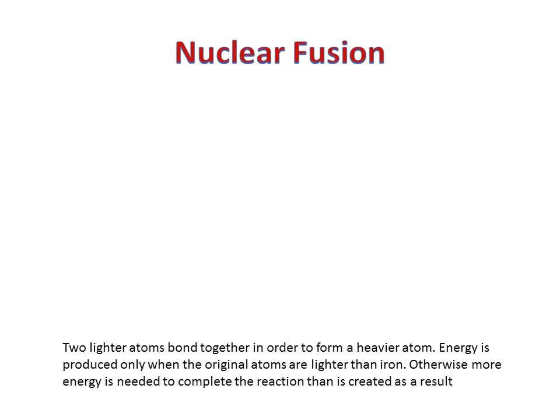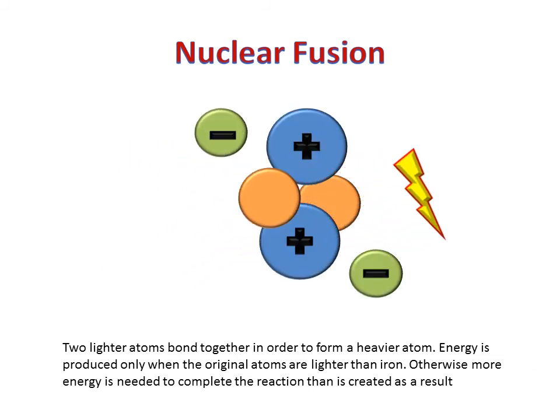Nuclear fusion is essentially the opposite of nuclear fission. Nuclear fusion is the result of two lighter atoms bonding together to form a heavier atom, or an atom with a greater atomic mass. However, this process requires a great deal of energy and therefore is only useful when two atoms that are lighter than iron fuse together because they are the only atoms that will produce more energy after the reaction than it takes to initialize the reaction. This process is very difficult and scientists are still working on mastering it today.